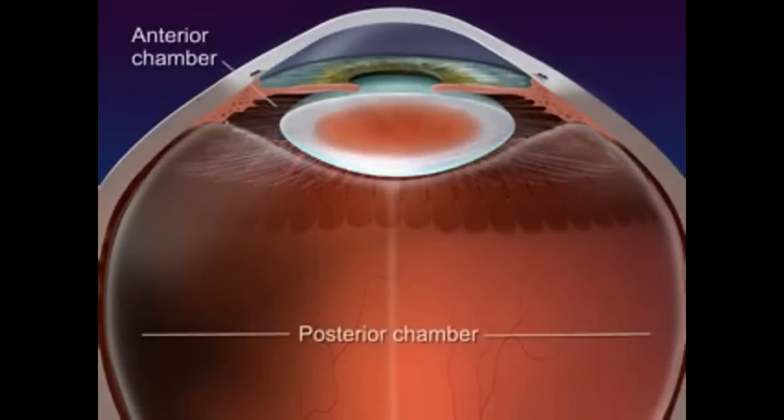The chambers are filled with a watery fluid that gives shape to the eye and helps refract the light rays. The anterior fluid is called the aqueous humor, and the posterior fluid is called the vitreous humor.